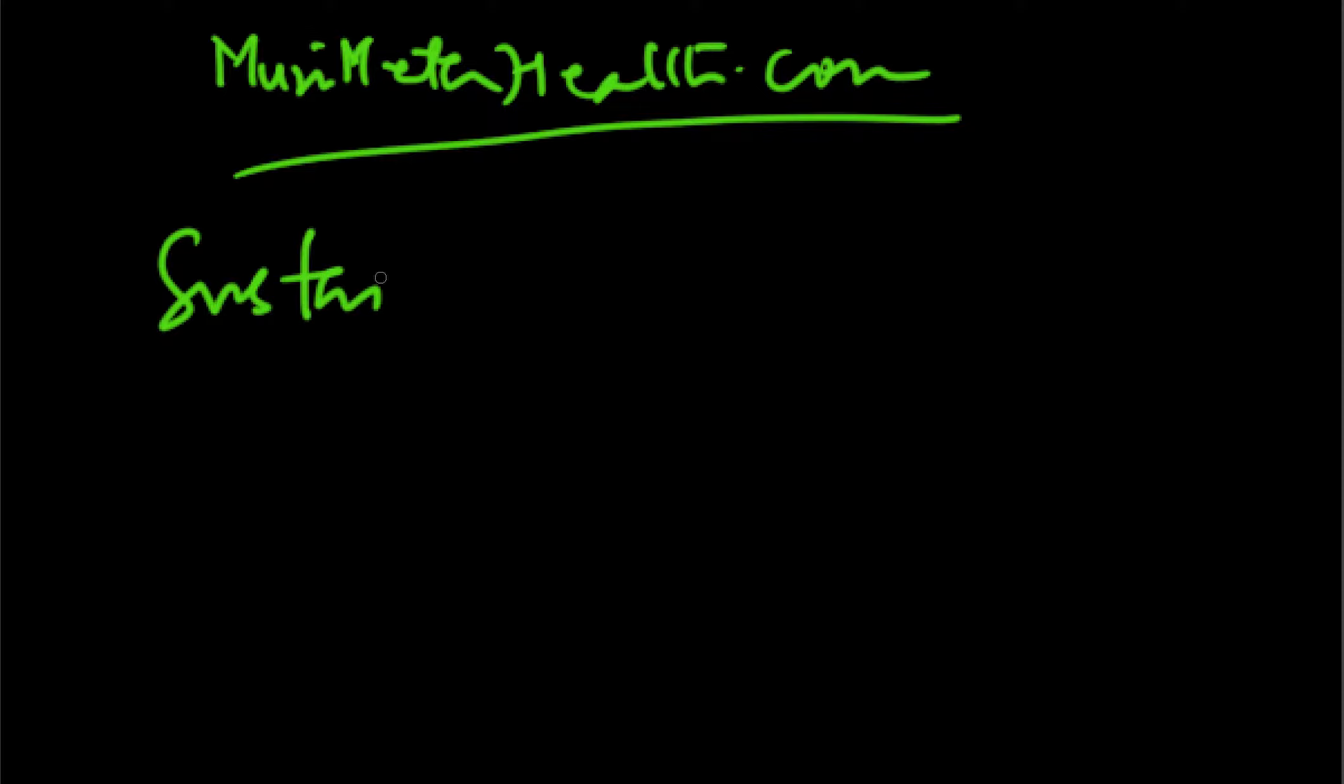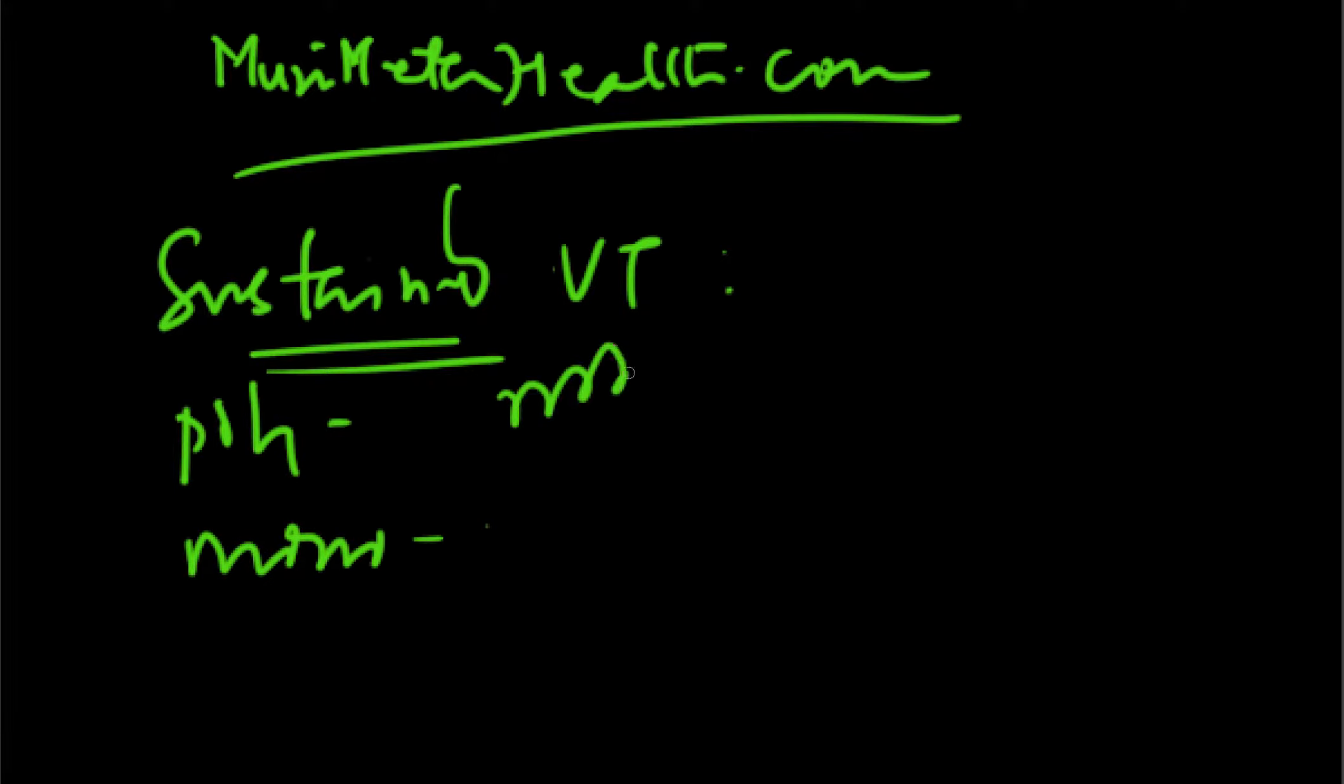So without further ado, the subject of the matter today is what is sustained VT? Now we understand various arrhythmias, but sustained VT is where you may have a polymorphic mechanism or you may have a monomorphic mechanism. A polymorphic will look like the following, and I'll tell you that in a second. Now polymorphic will have more like a torsades pattern.